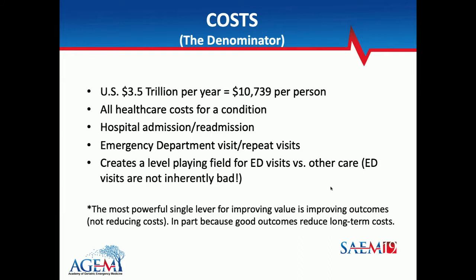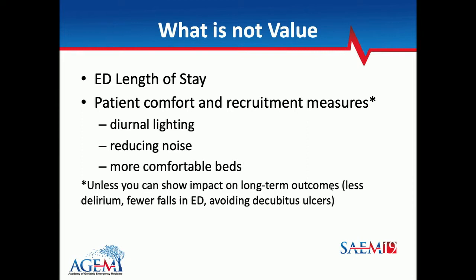ED length of stay in itself is not necessarily value — the equation is health outcomes that matter to the patient divided by costs. ED length of stay might be interesting to measure, but it's not value in itself. Additionally, much of what we've talked about in geriatric EM could be part of value — providing a soft bed and preventing a sacral decubitus could improve health outcomes. But simply using amenities to recruit patients to your ED, like nice lighting — I'm not saying it's bad, just that it's not central to the measurement of value.